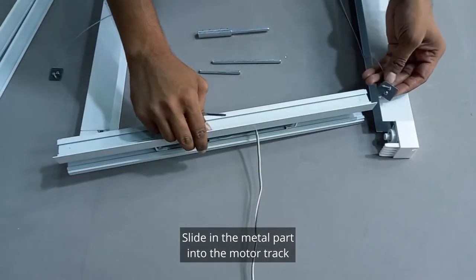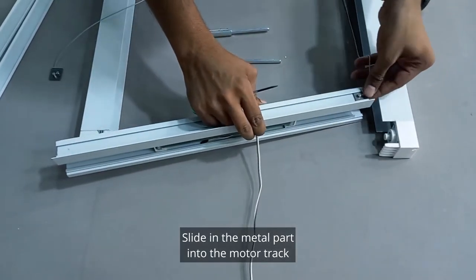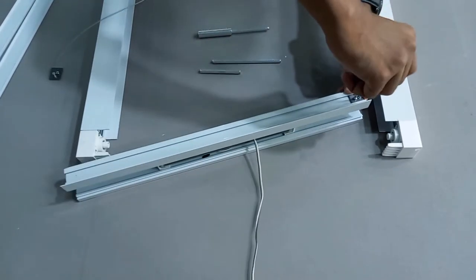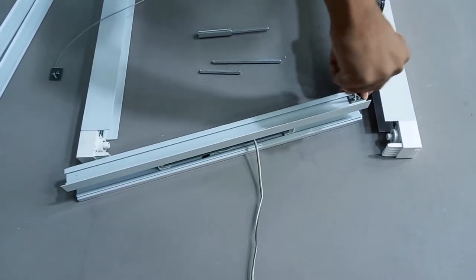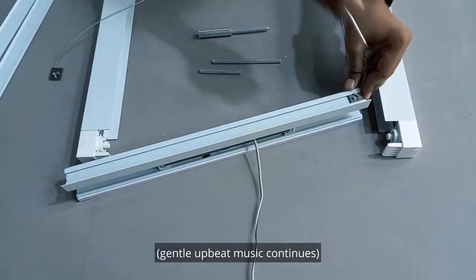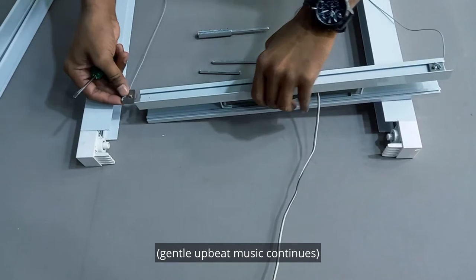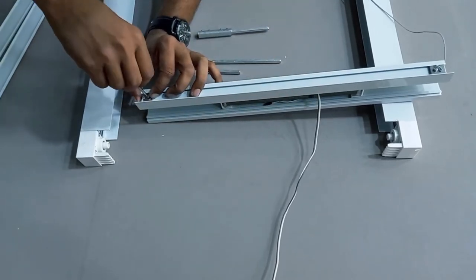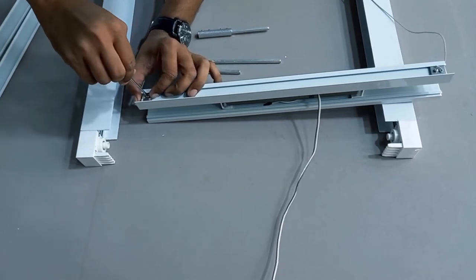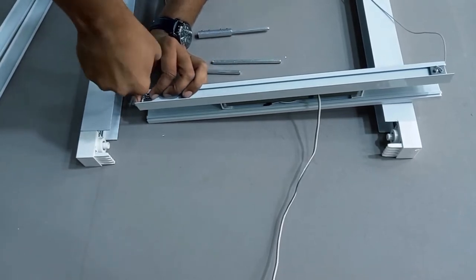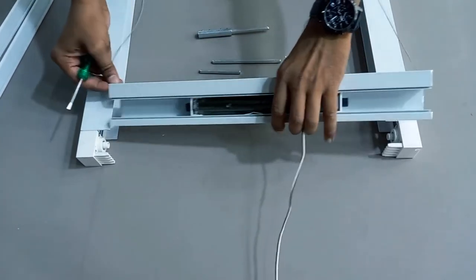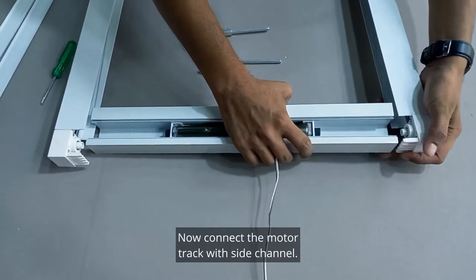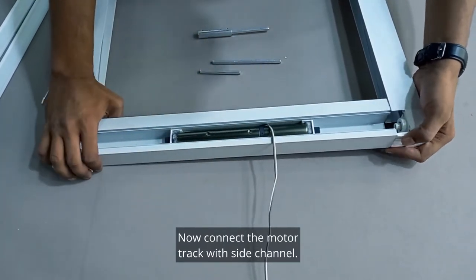Slide in the metal part into the motor track and fix it at the edge. Now connect the motor track with side channel.